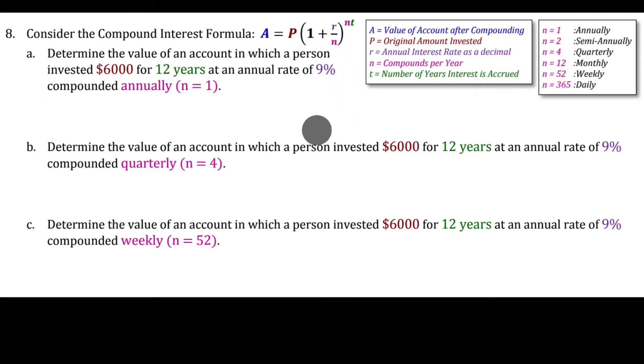Now this is a lot of information, but what each variable represents is shown here. A is the value of the account after compounding has occurred, P is the original amount invested, R is the interest rate always written as a decimal, and N is the number of times it's compounded in a year.